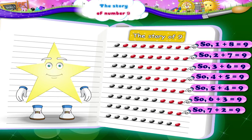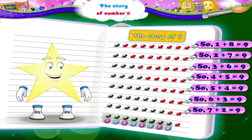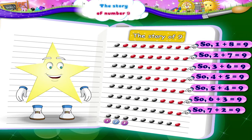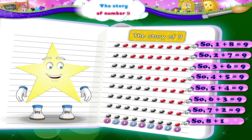And finally, we have reached the end of our story of 9. 1, 2, 3, 4, 5, 6, 7, 8 black beads plus 1 red bead is 1, 2, 3, 4, 5, 6, 7, 8, 9. 8 plus 1 is 9.